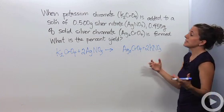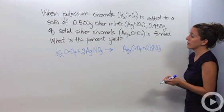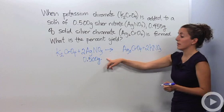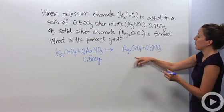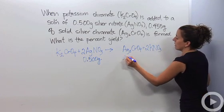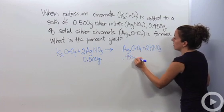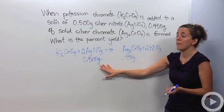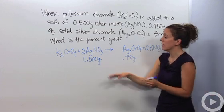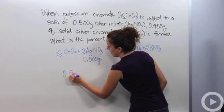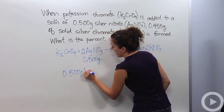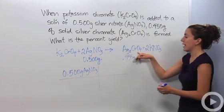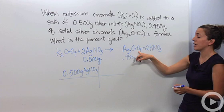In my lab, I was given 0.5 grams of silver nitrate. When I went back in the lab, I actually produced 0.455 grams of Ag₂CrO₄. But how much should I produce if I did everything perfectly? We're going to do a mass-to-mass stoichiometry problem. We're given 0.5 grams of AgNO₃ and need to figure out how many grams of Ag₂CrO₄ I can produce.